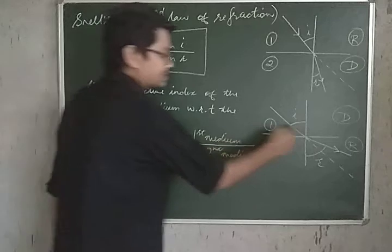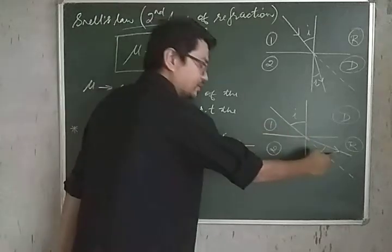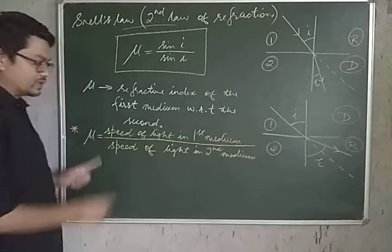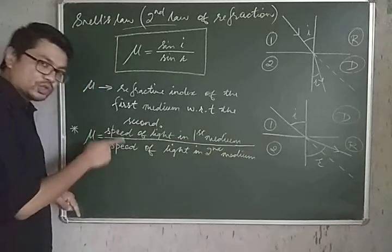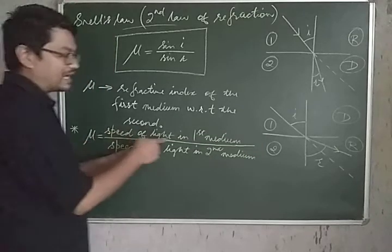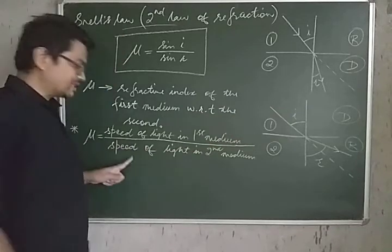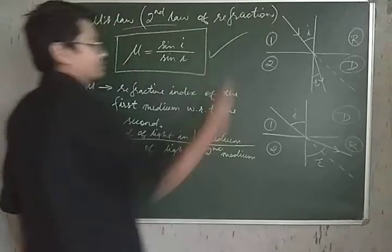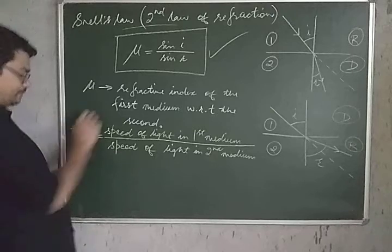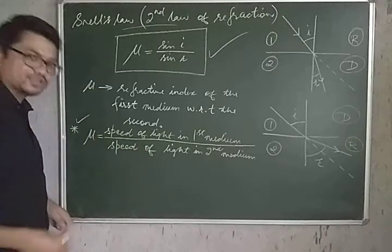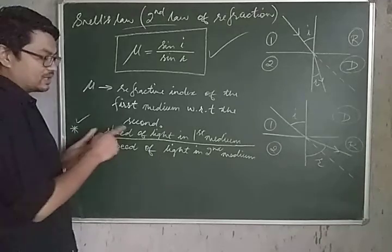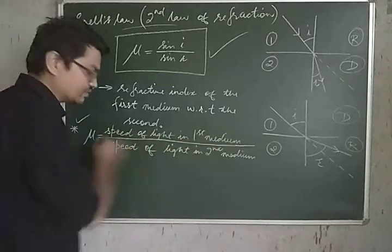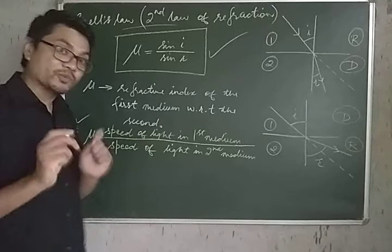Since light travels with different speed in different media, the refractive index of the second medium with respect to the first is also given by the ratio of the speed of light in the first medium divided by the speed of light in the second medium. Remember this important relation.